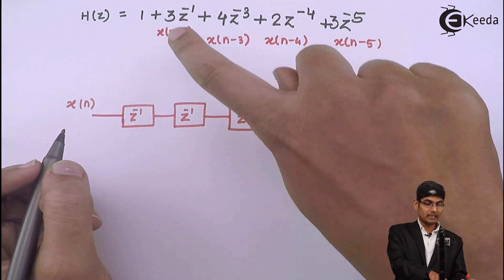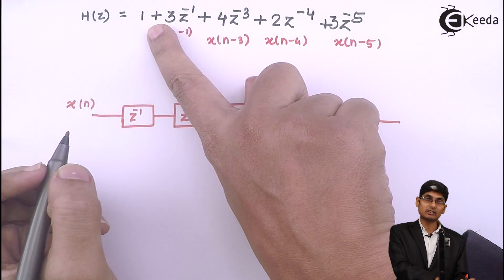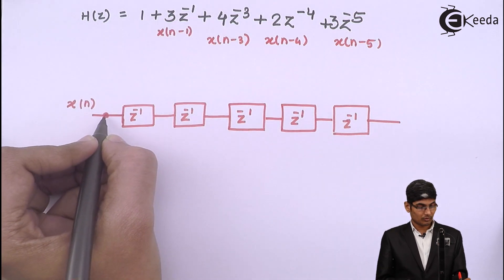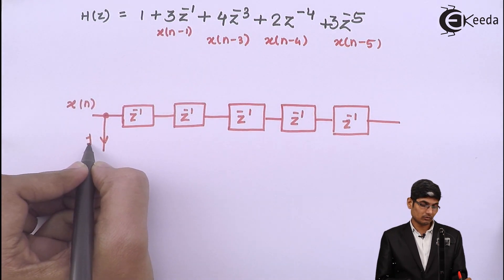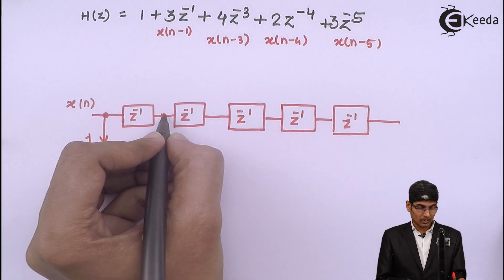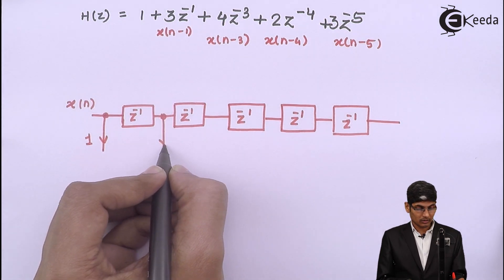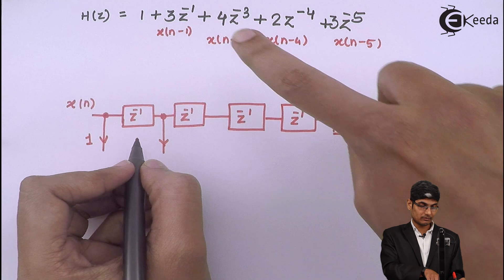Now, do we have anything coming with x(n)? Yes, because there is a 1 over here. So we will have 1 coming out from x(n). Then we will have from x(n-1). We will have one more coefficient which is given as 3.